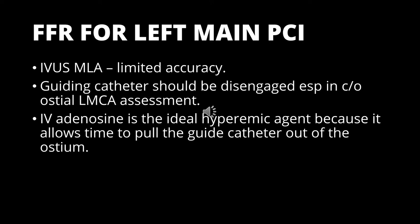Sometimes the side branch — specifically the left circumflex — may be angiographically stenosed but physiologically normal. There are important points to remember while doing FFR for the left main coronary artery. First, when assessing an ostial left main coronary artery, the guiding catheter should be disengaged to avoid dampening of pressure. Second, IV adenosine is the preferred hyperemic agent because it allows pulling the guide catheter out of the ostium.